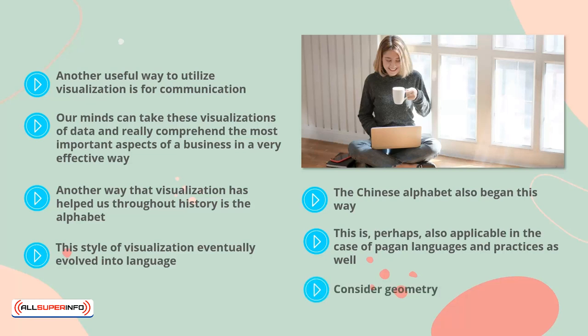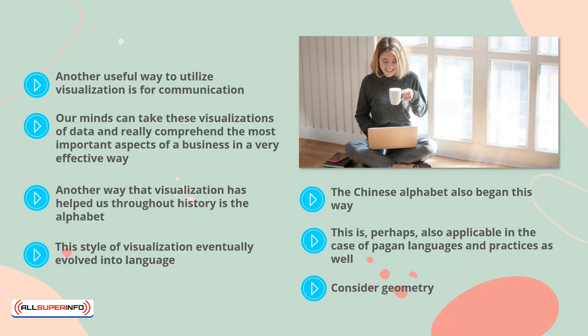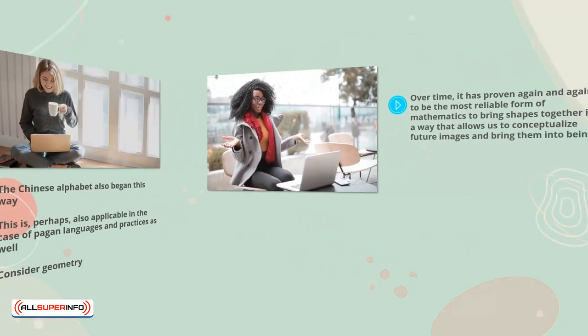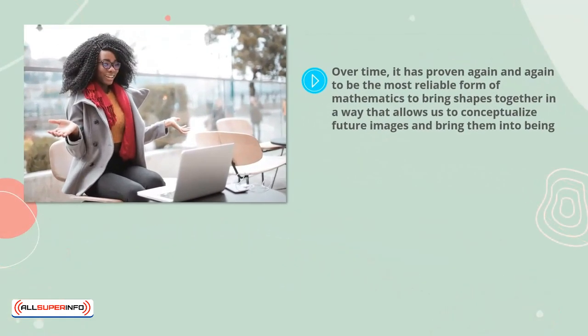Consider geometry. This is all visualization of abstract ideas and shapes, but it helps us to represent what needs to be done in order to create incredibly powerful structures and technologies. Over time, it has proven again and again to be the most reliable form of mathematics to bring shapes together in a way that allows us to conceptualize future images and bring them into being. It is a powerful tool, and without visualization, it wouldn't even exist.